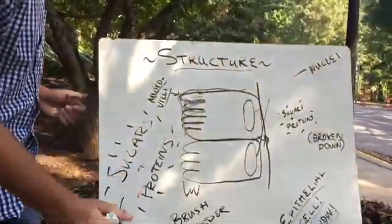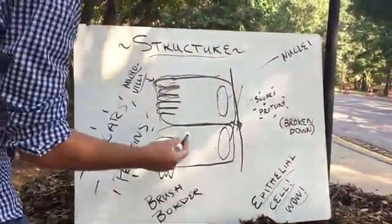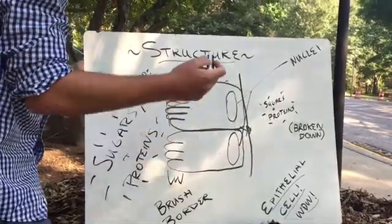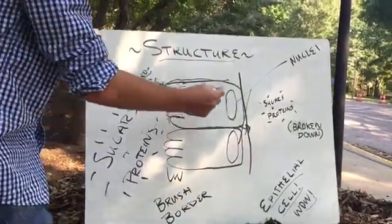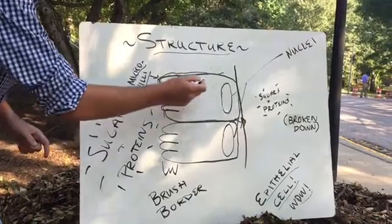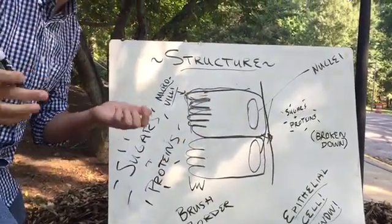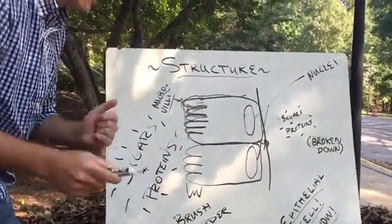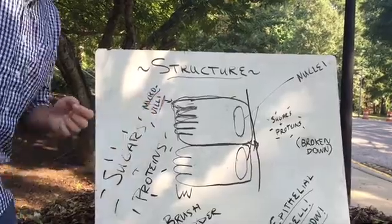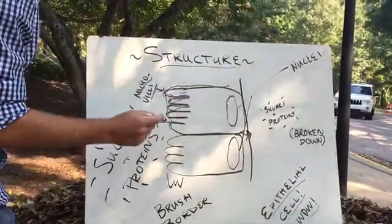So these cells, as you might be able to see, are epithelial. That means that they're long and rectangular. And another characteristic of these cells is that they have these finger-like projections. What are these finger-like projections called? They're called microvilli. What do these microvilli do? They increase surface area.